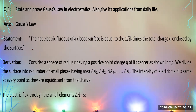The net electric flux out of a closed surface is equal to 1 over epsilon naught times the total charge q enclosed by the surface. So the formula is: flux equals 1 over epsilon naught times q. This is the statement of Gauss's law, and we will derive this formula to confirm it.